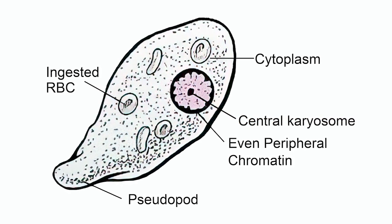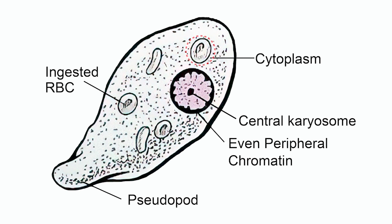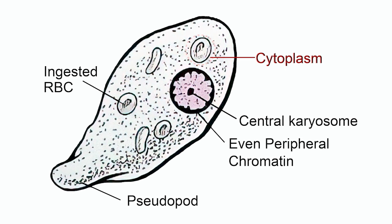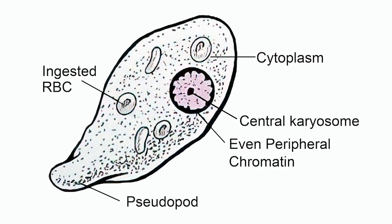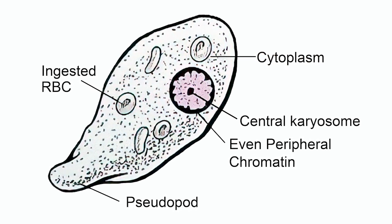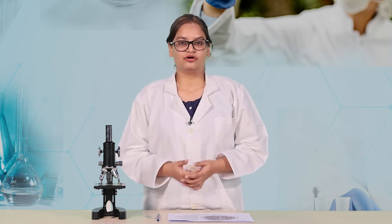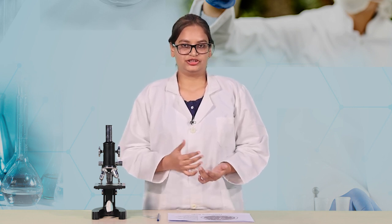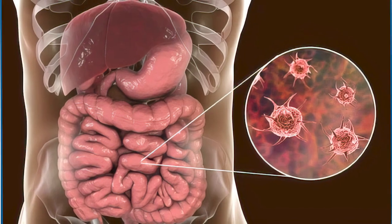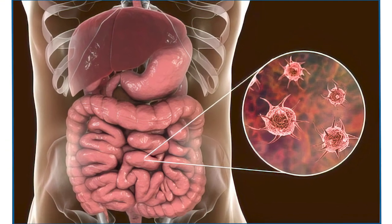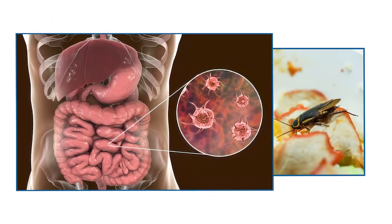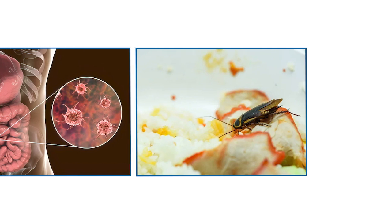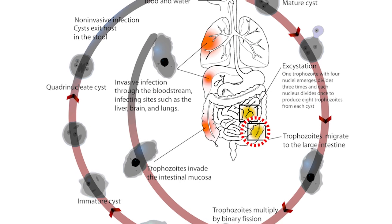A few food vacuoles are seen in the cytoplasm; contractile vacuoles are absent. The cysts are uninucleate or quadrinucleated. The quadrinucleated cysts are infective. Human beings get Entamoeba infection through contaminated food and water.